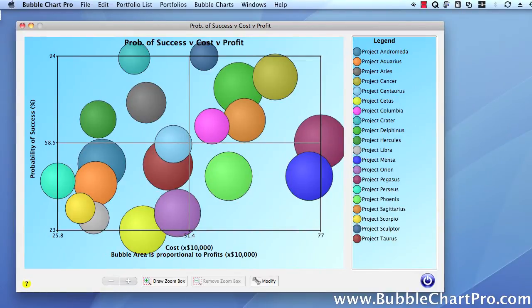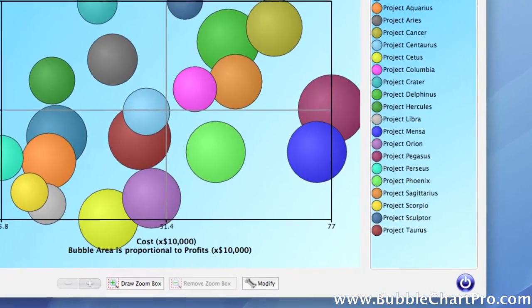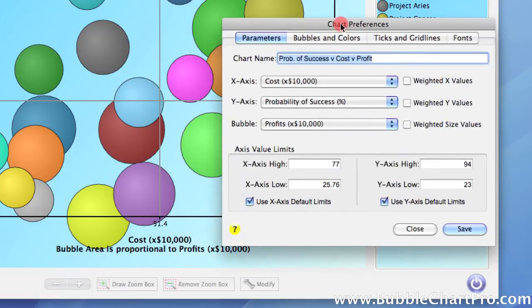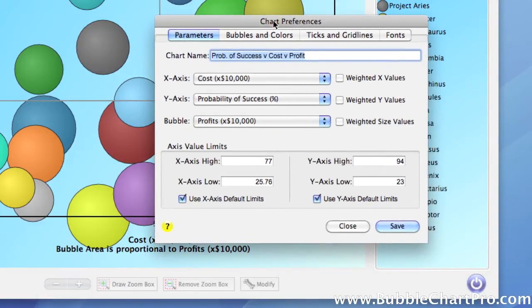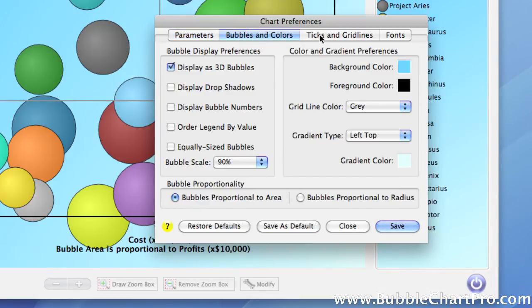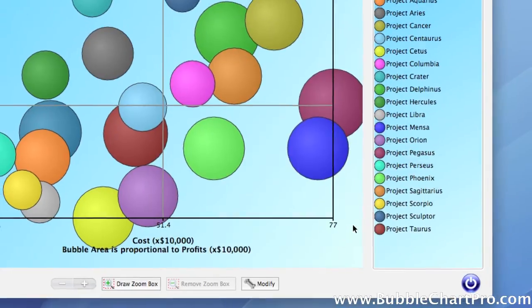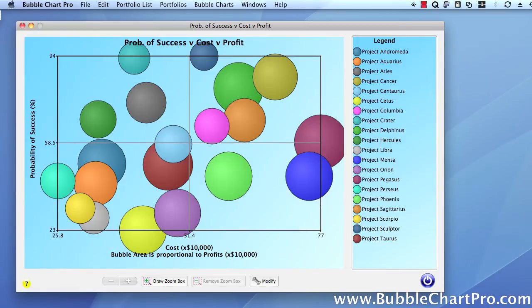Though we're not going to discuss it in detail in this video, you can change virtually any display aspect of the chart by using the Chart Preferences form that is opened by clicking on the Modify button at the bottom of the chart. This form contains four screens for modifying the chart parameters, the bubble and colors display, the ticks and grid lines, and the fonts. You can imagine how useful this interactivity can be when you're presenting data to a group or holding a working team session, but there's more.